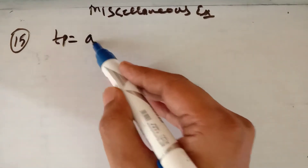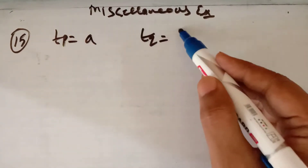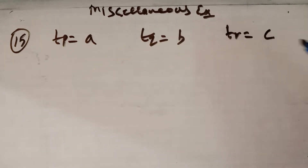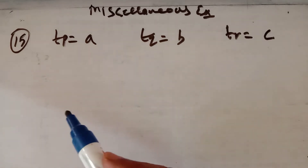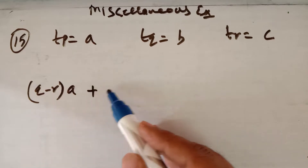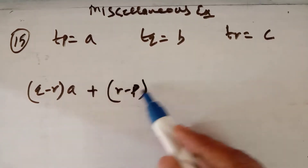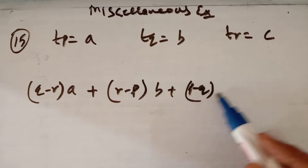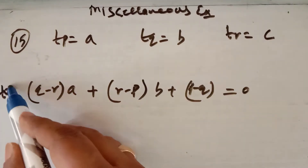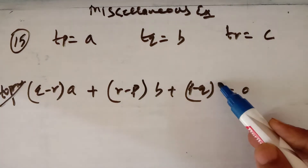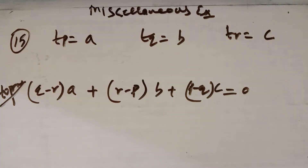The pth term is given as a, the qth term is given as b, and the rth term of the AP is given as c. You have to prove that (q−r)·a + (r−p)·b + (p−q)·c is equal to 0. We will simplify the values of a, b, c and substitute into the left-hand side to prove it equals 0.